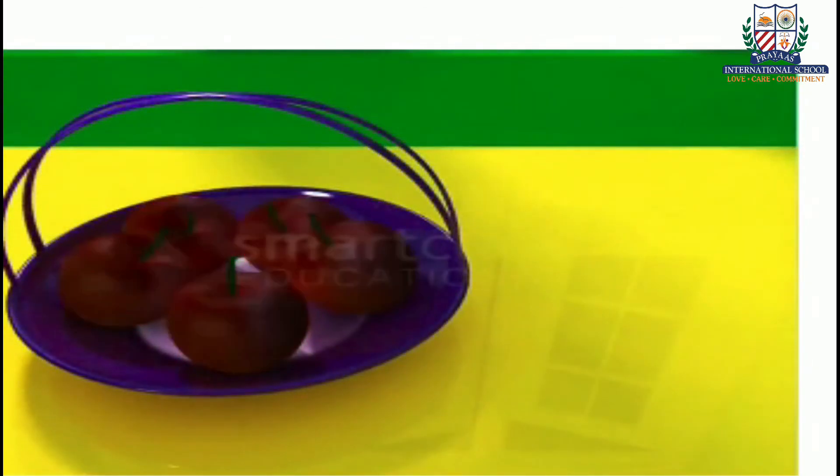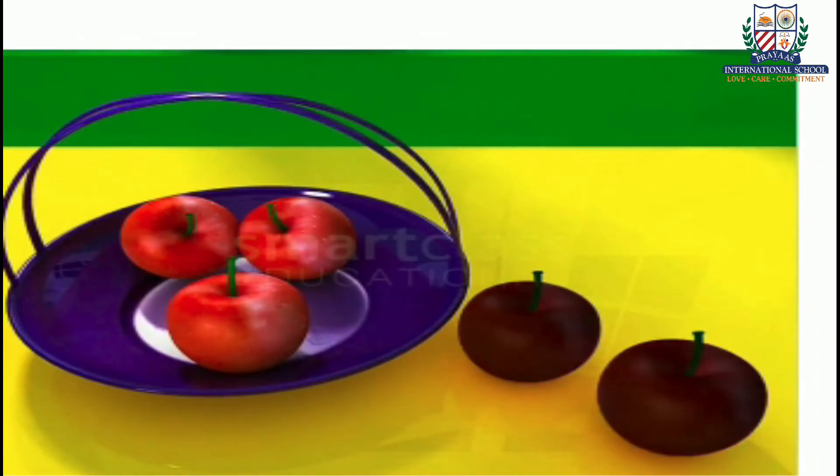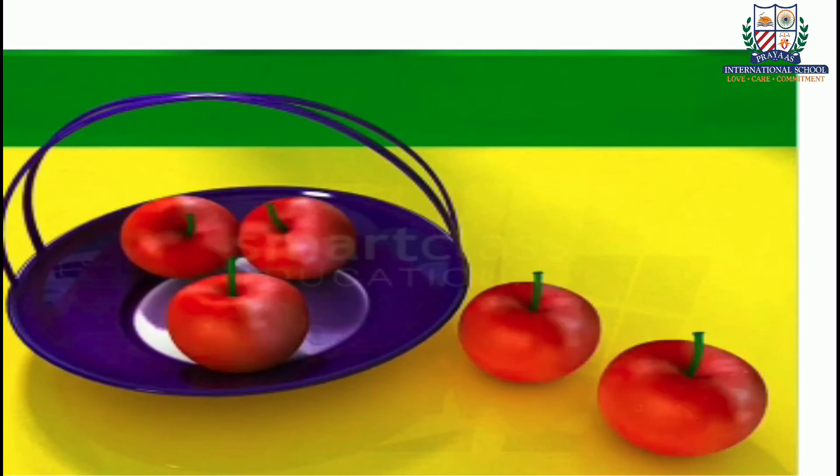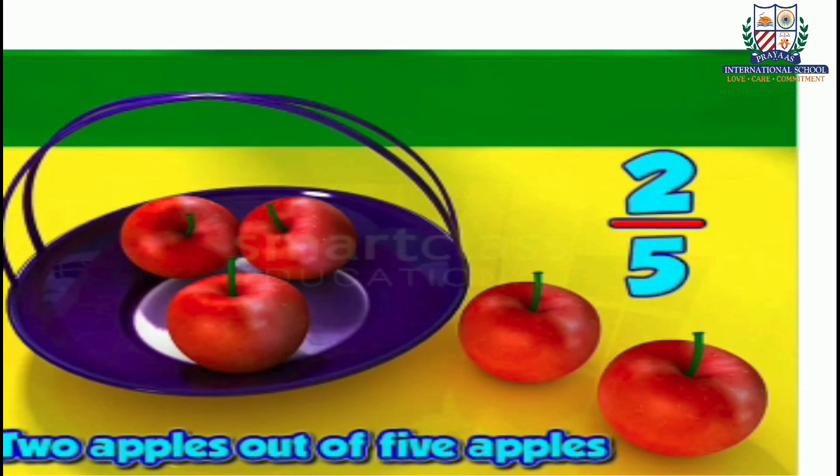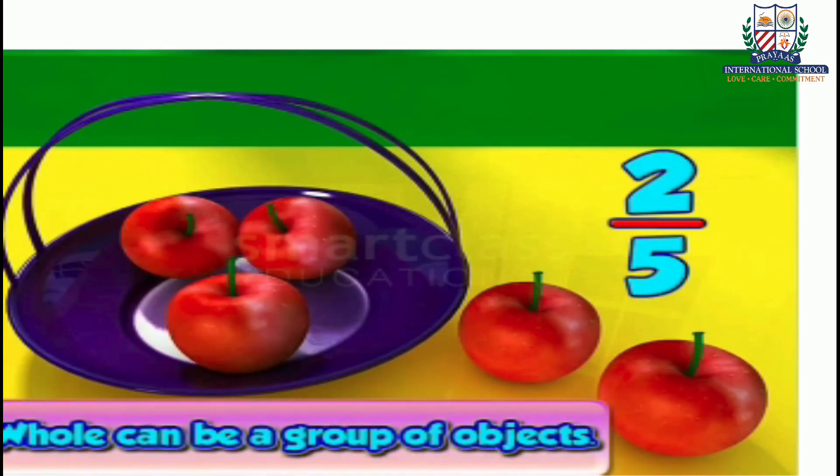This is a basket of five apples. Two apples have been taken out. These two apples are part of the whole group of apples in the basket. This can be written as two by five. This means two apples out of five apples. You can see that whole can also be a group of objects.